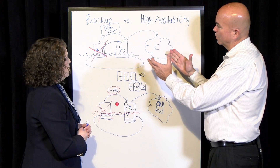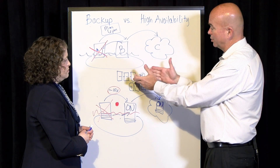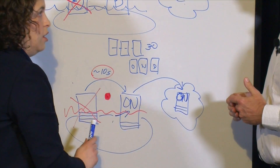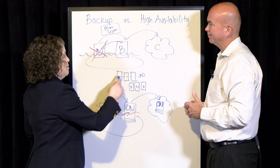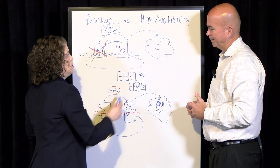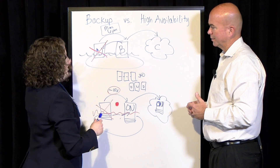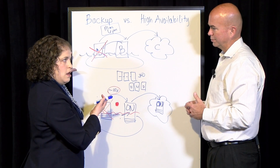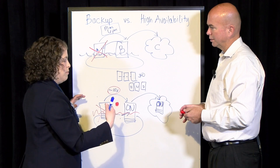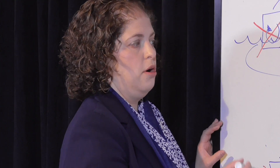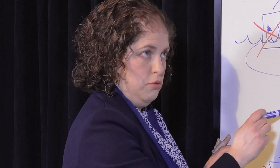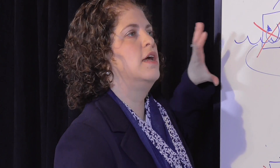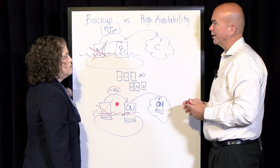Obviously, backup doesn't go away — we still use that for our historical copies. High availability is not the best technology for keeping historical copies; backup is far better for that. What we typically see people doing is bucketing their workloads into critical systems and less critical systems — a tiering approach. Critical systems are often protected both with an availability solution and a backup solution, while a less critical system might just be protected with backup, understanding that two days of downtime isn't going to break anyone.